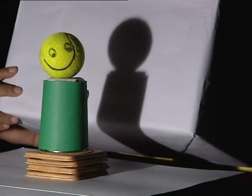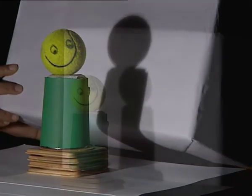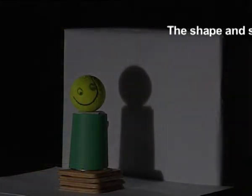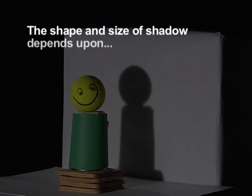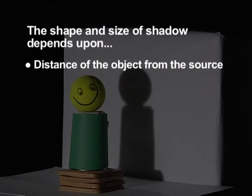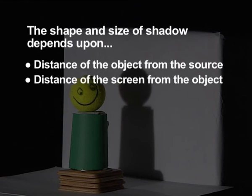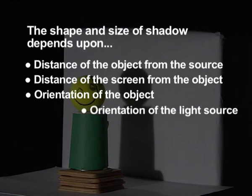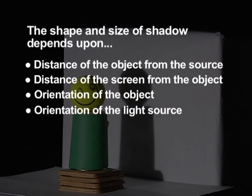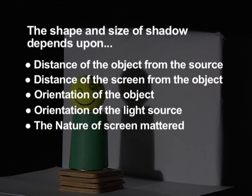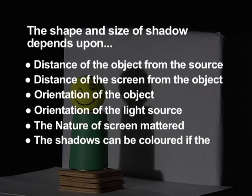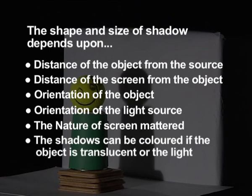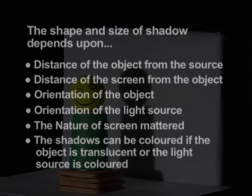From the activities, we learnt about the formation of shadows. We saw that the shape and size of the shadow depends upon the distance of the object from the source, the distance of the screen from the object, the orientation of the object, and the orientation of the light source. We also saw that the nature of the screen mattered, and that shadows can be colored if the object is translucent or if the light source is colored.